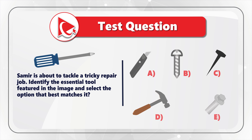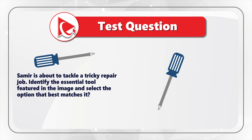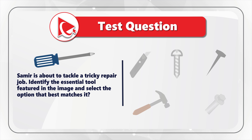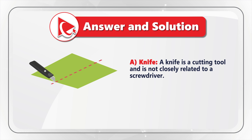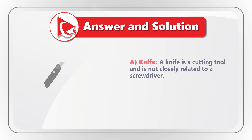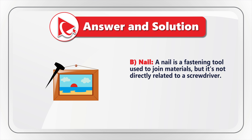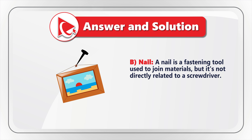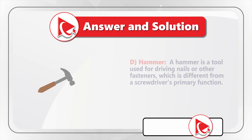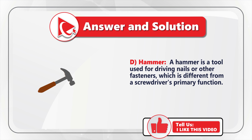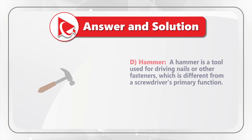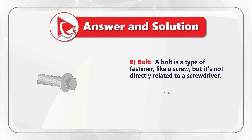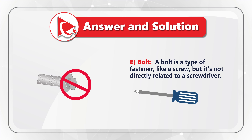I believe you probably recognize the tool shown — it is a screwdriver. But this is only the first step. In the second step, we need to identify all other tools shown and determine their relationship with the screwdriver. Choice A is a knife — a cutting tool, not closely related to a screwdriver. Choice B is a nail — a fastening tool used to join materials, but also not directly related to the screwdriver.